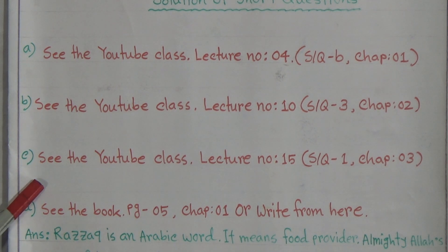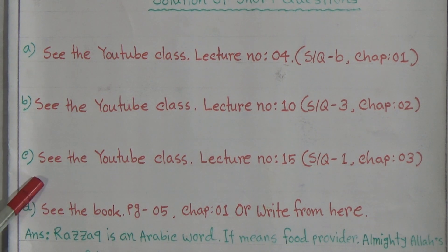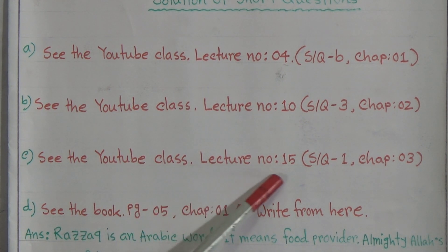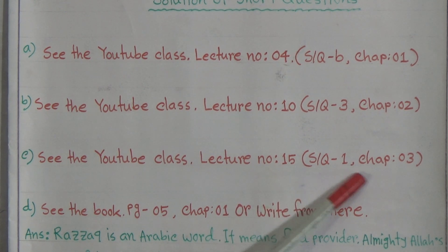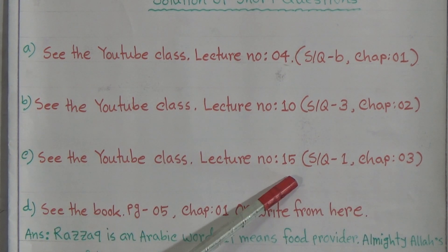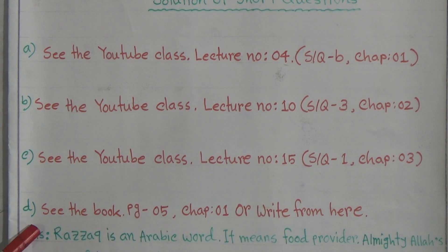C number question: what is the benefit if our parents remain pleased? For the C number question, you will get the answer in your YouTube class, lecture number 15, short question number 1, from chapter number 3. So from YouTube class lecture number 15, you will get the short question number C answer.